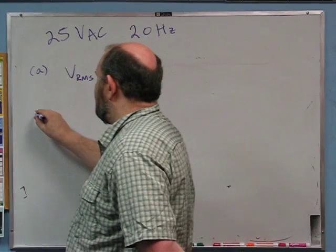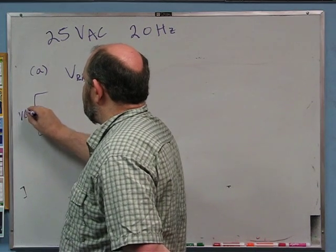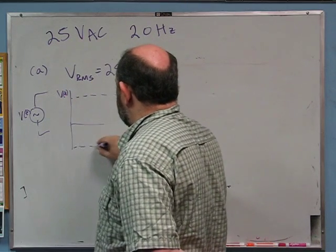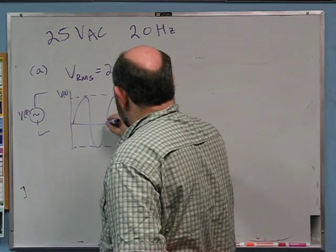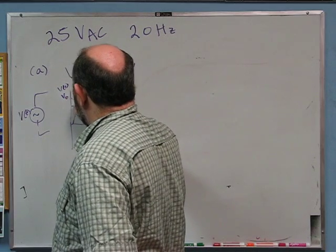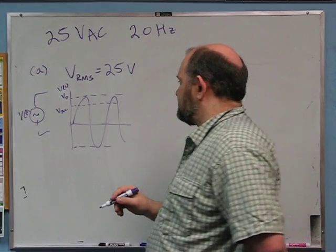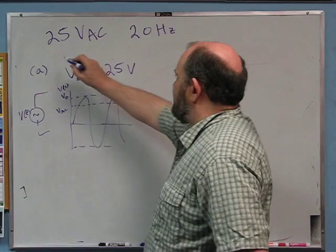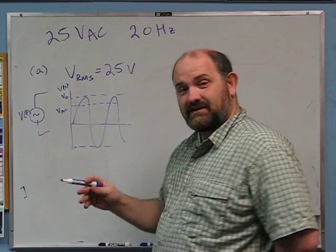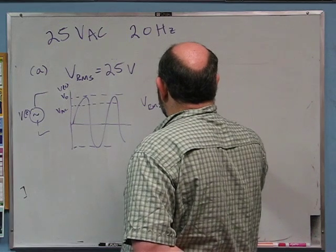That's what 25 volts AC means. Our power supply is a V of T, and if you plot V of T, it's going to oscillate between plus and minus the amplitude, which I'll call V sub zero. The RMS voltage, which is what we call the AC voltage, is a little bit lower. For a sine wave — which is what an AC power supply produces — V_RMS equals V_naught divided by the square root of 2.